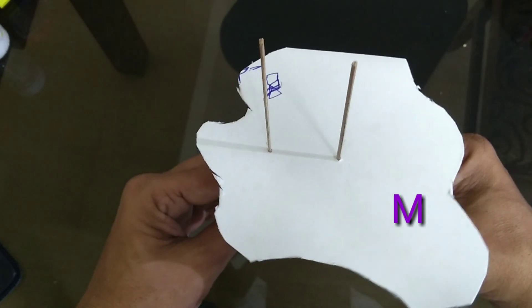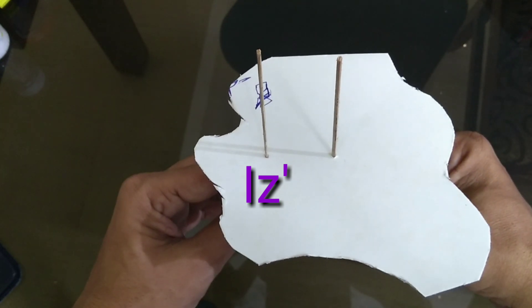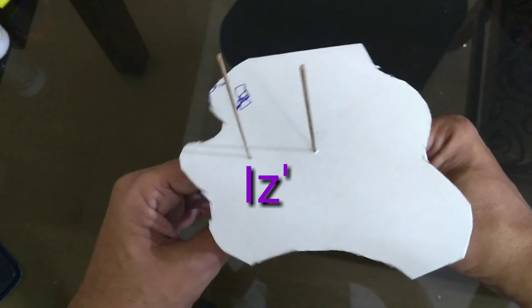And mass of the lamina is equal to m. Moment of inertia about the parallel axis is IZ prime.